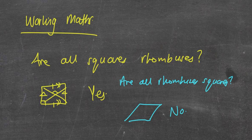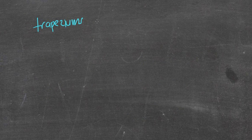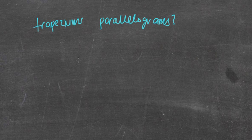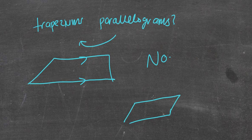They can also ask things like: are all parallelograms rectangles, or are all rectangles parallelograms? A common one I see a lot is: are all trapeziums parallelograms? Drawing it out — that's my trapezium — obviously that's not a parallelogram, so no. But if you switched it and asked could a parallelogram be a trapezium — absolutely yes, because it has at least one pair of opposite sides that are parallel.